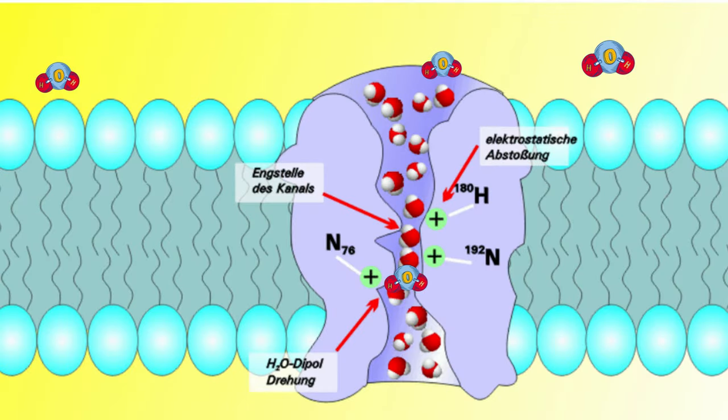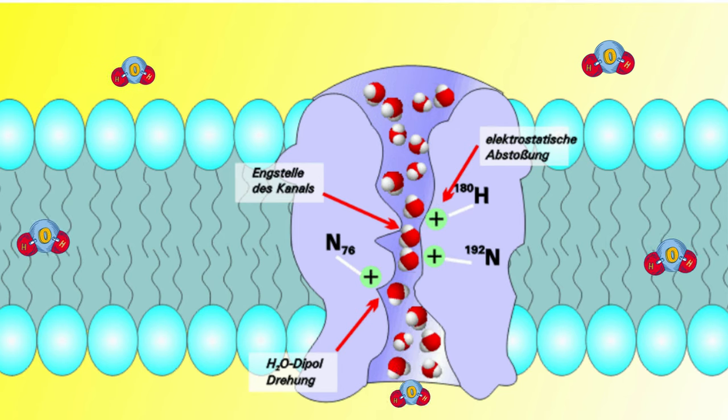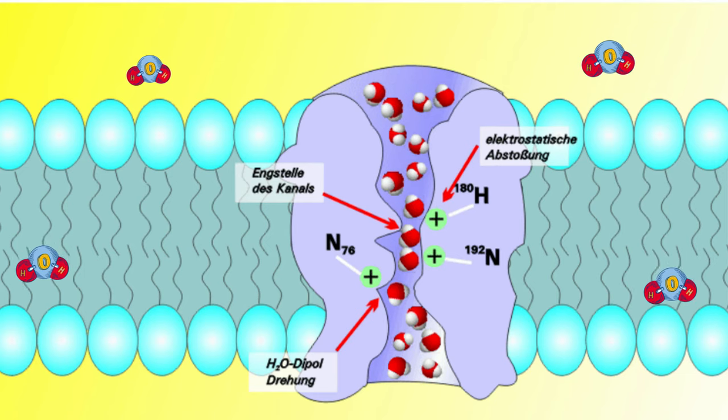In fact, most water enters and exits the cell through channel proteins called aquaporins. Water can pass through the cell membrane through simple diffusion because it is a small molecule.